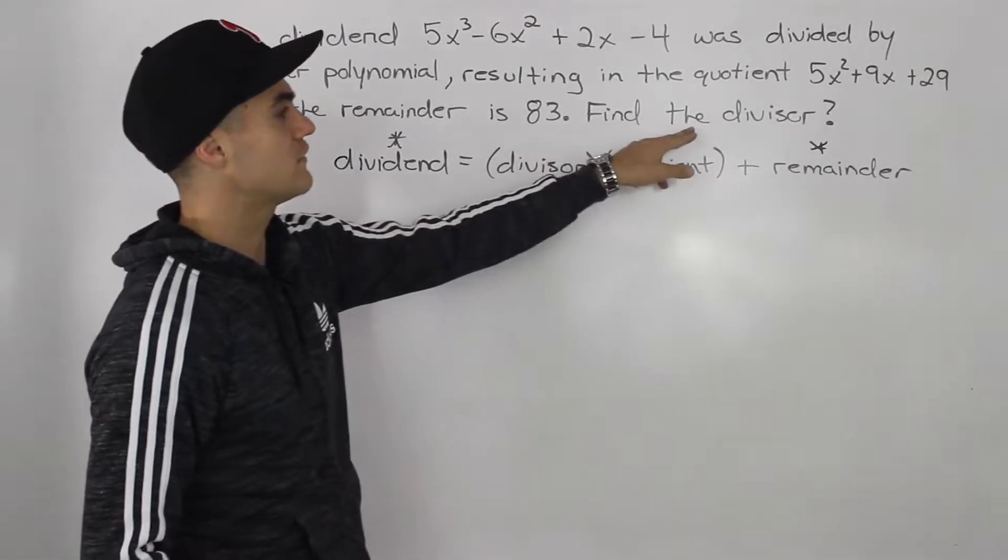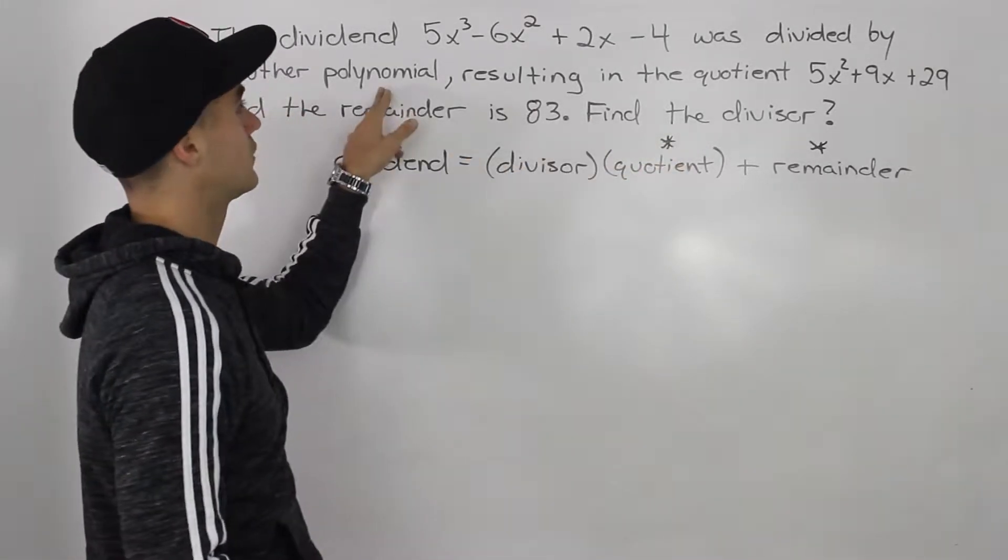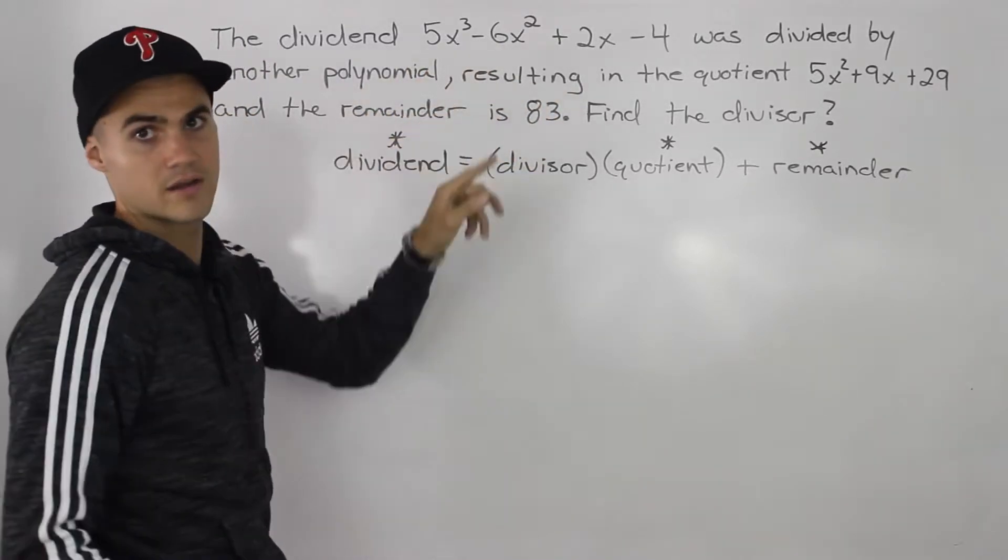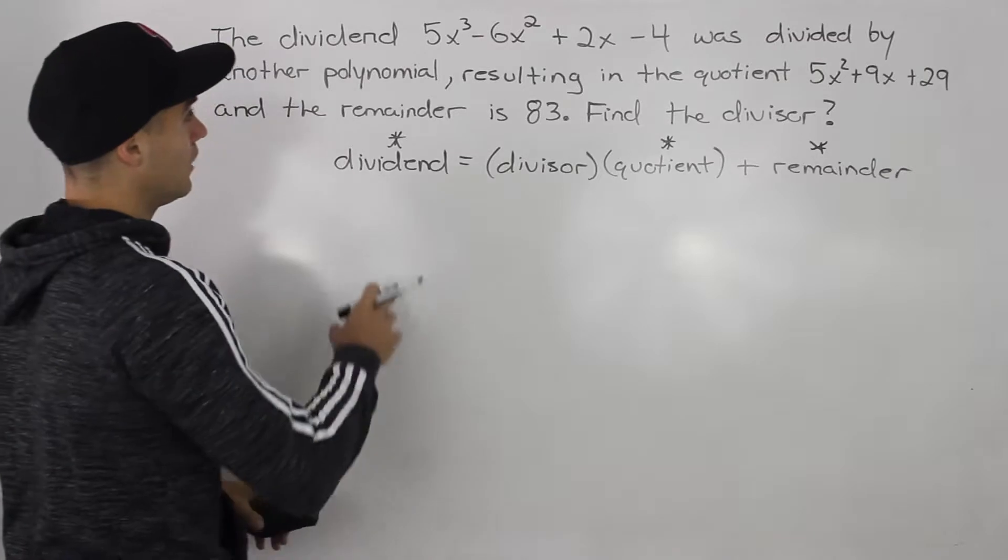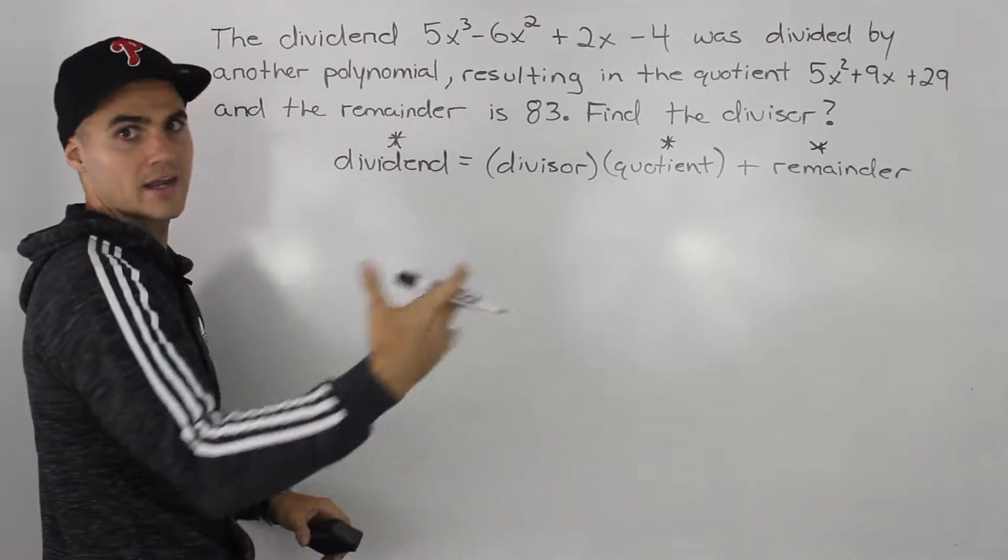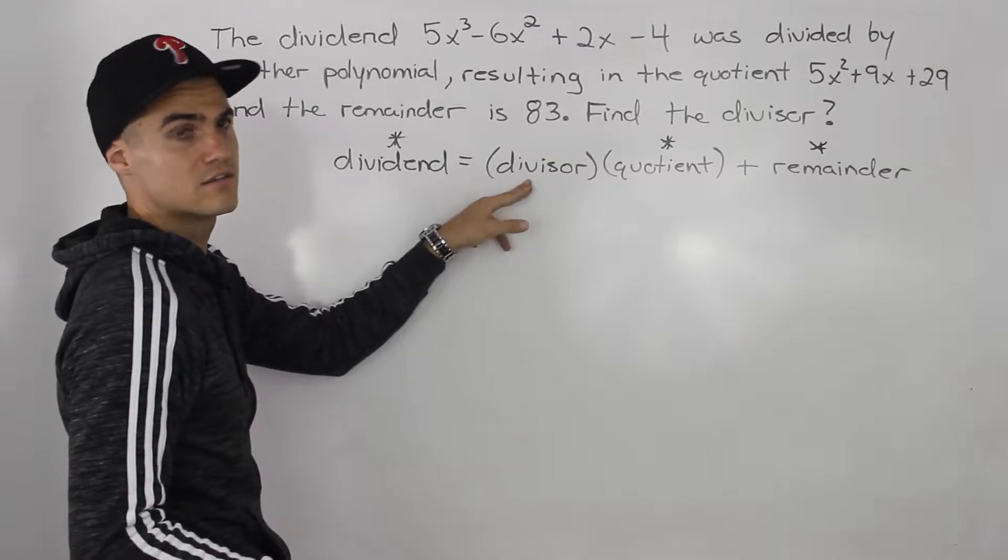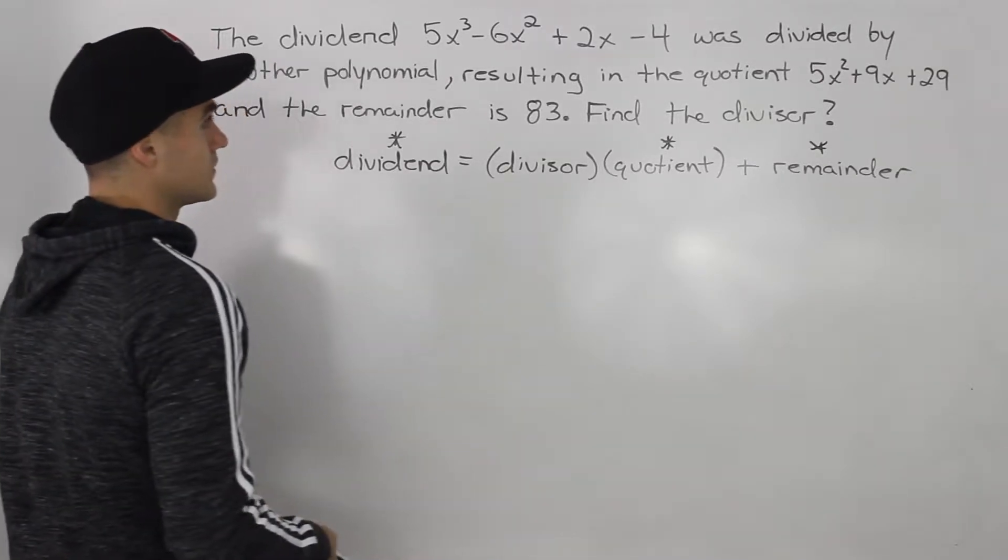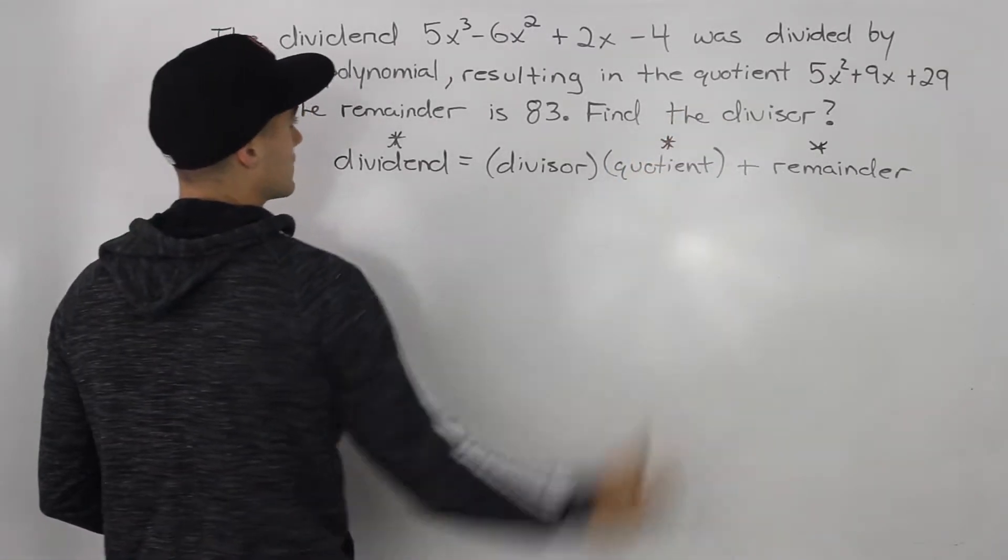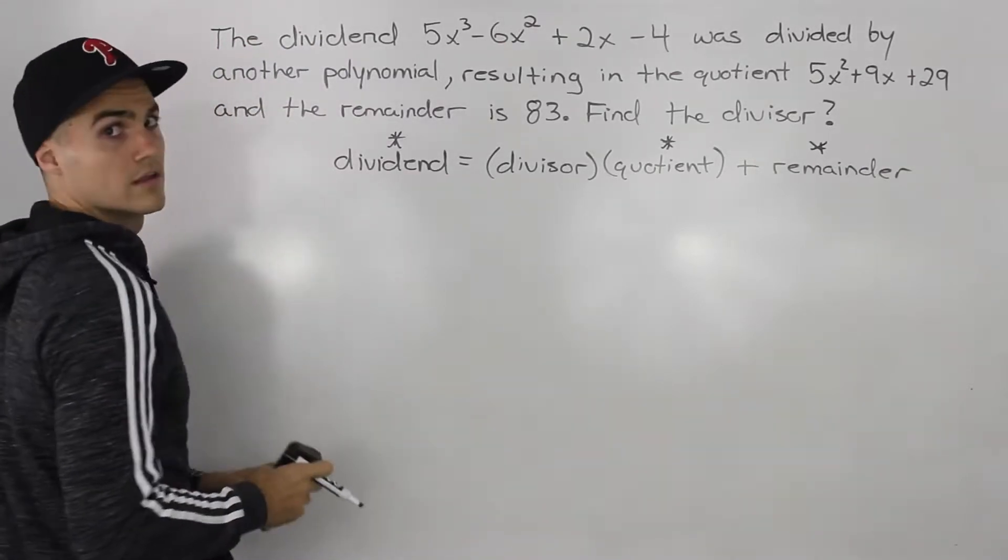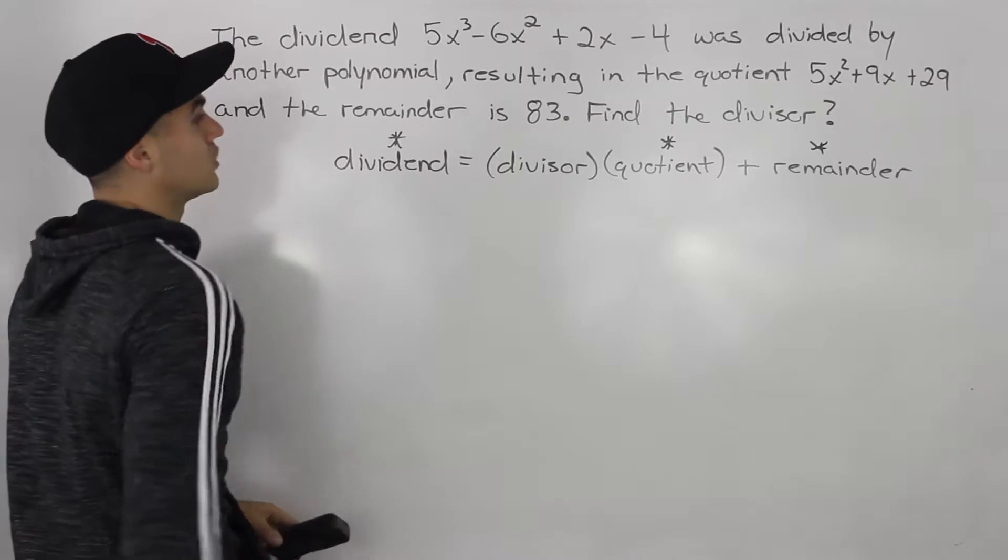And even if it didn't say find the divisor, let's say it said find the polynomial because if you read the question it says the dividend was divided by another polynomial. Well when we're taking a dividend and we're dividing it by another polynomial, that other polynomial is always the divisor. So it didn't have to say find the divisor, but you should be able to tell that that's what they are looking for.